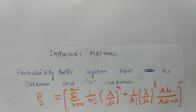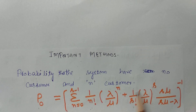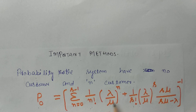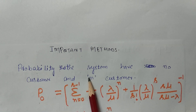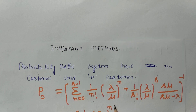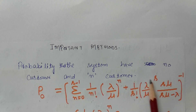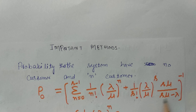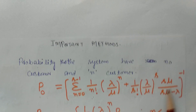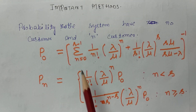Before discussing the problem, I will discuss some important formulas we are going to use while solving it. First, the probability that the system has no customers — P0 — is given by: the summation from n equals 0 to s minus 1 of (1/n!) times (λ/μ)^n plus (1/s!) times (λ/μ)^s times (sμ / (sμ − λ)), all raised to the power minus 1.